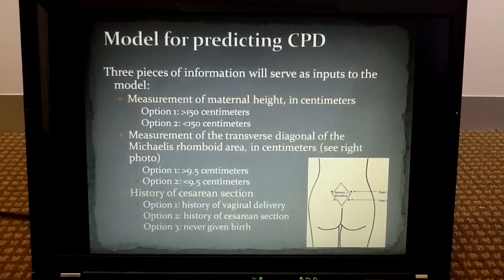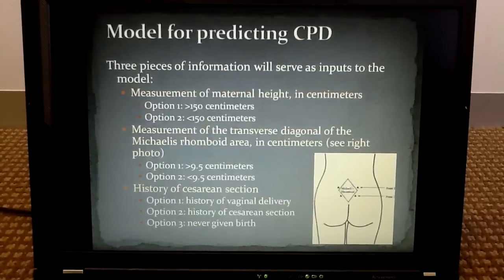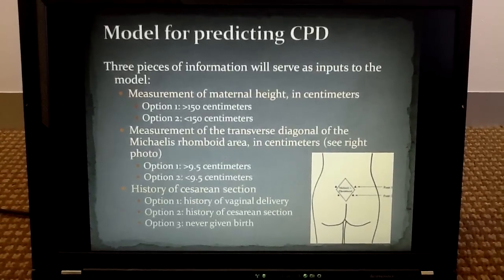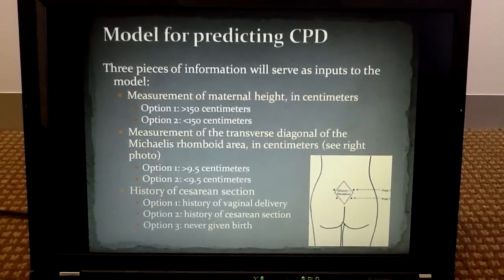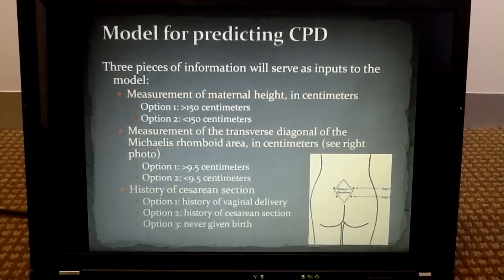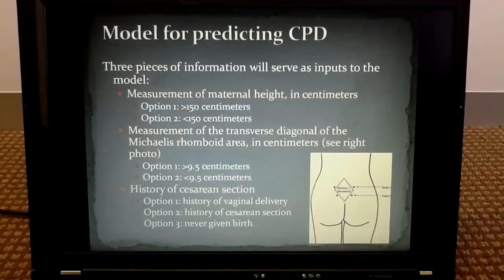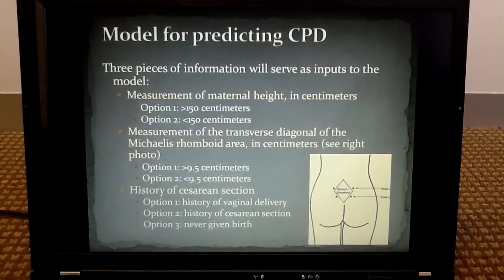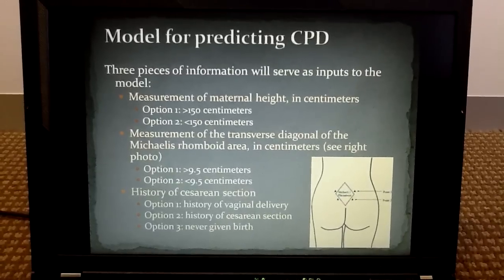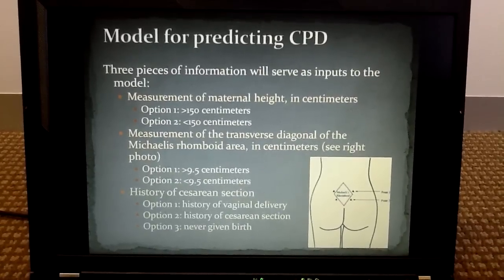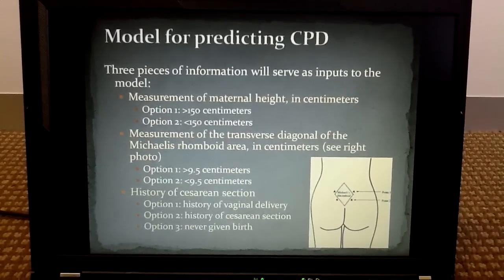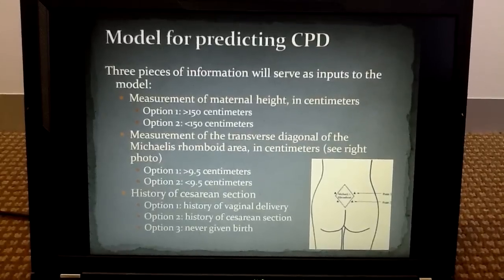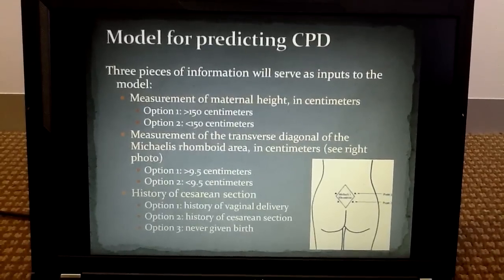Our model will require three pieces of information from a pregnant woman. These include maternal height, measurement of the transverse diagonal of the Michaelis rhomboid area as shown in the picture, and whether the woman has had a history of cesarean section.